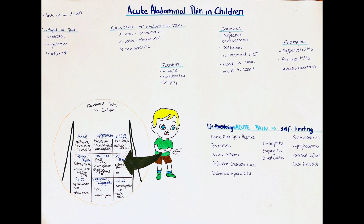Regarding treatment of acute abdominal pain, many patients experience hypotension due to vomiting or diarrhea. We first encourage oral fluid intake; if that is not possible, IV fluid replacement therapy is offered. Younger children are prone to abdominal sepsis, which can lead to septic shock. Treatment includes isotonic fluid replacement, antibiotics, and vasopressors such as dopamine. Analgesics are also used to alleviate abdominal pain.